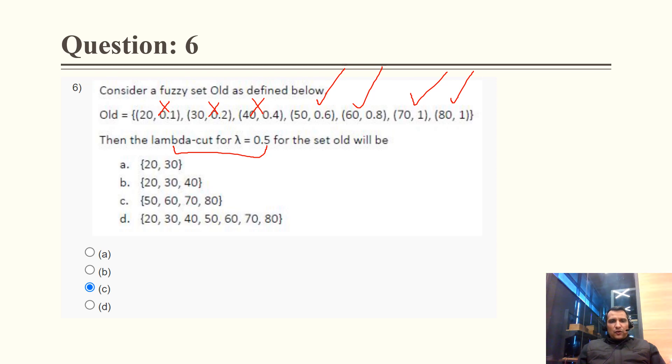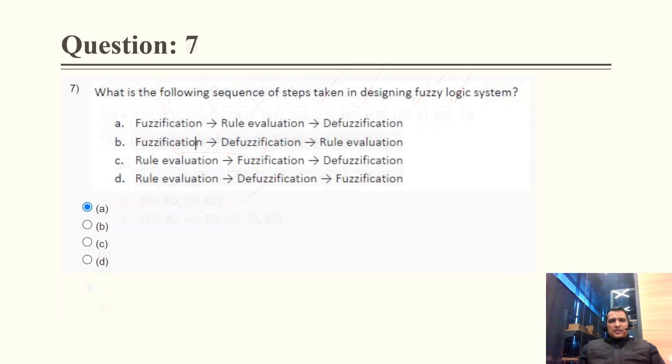The element at age 80 has membership value 1, so it is selected. The correct lambda cut set is {50, 60, 70, 80}, making option C the correct answer.